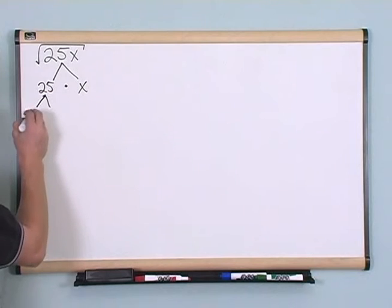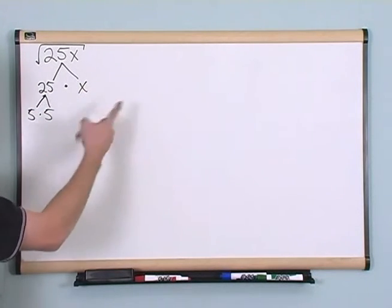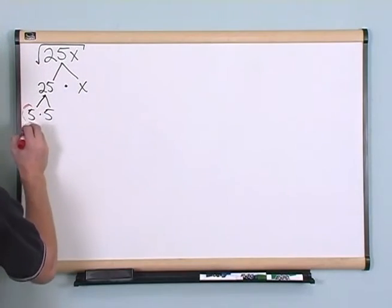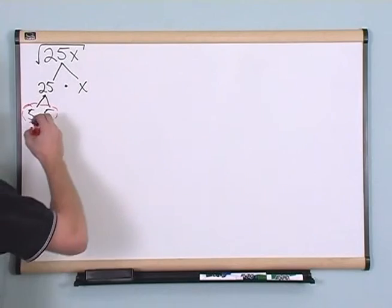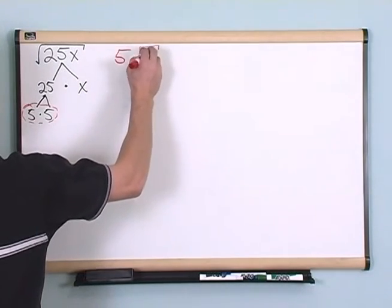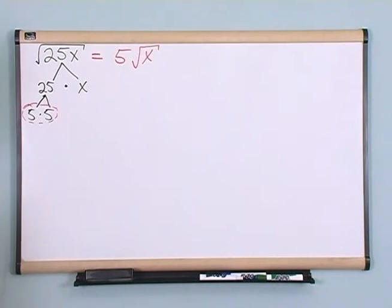Under 25, I've got 5 times 5, and that's as far as I can go. Of course, x, that's as far as I can go there. I've got a pair right here, so I'll pull it out of the radical, and I put a single 5 down, but I've got to carry my x over here because it's lonely and there's nothing else I can do with it. It's got to stay under the radical. 5 times the square root of x.